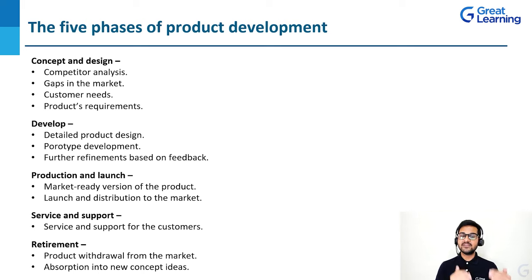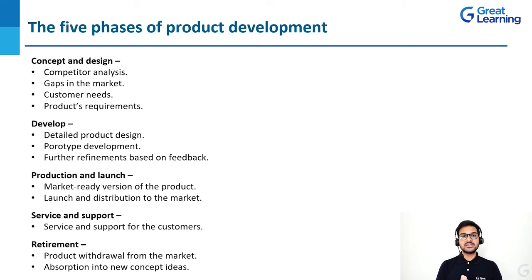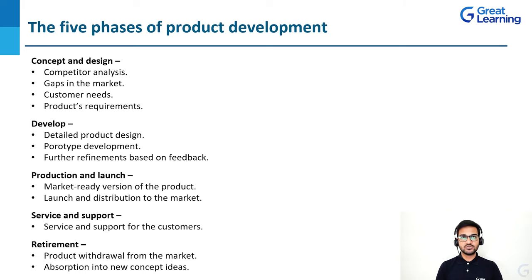Once that is done, we reach the second stage, which is development. Detailed product design is done, the prototype design is created, feedback is taken, and further refinements based on that feedback are made. A basic prototype will be ready in the development phase. Once that is done, we reach the third stage, which is production and launch — the market-ready version of the product is ready and then launch and distribution to the market happens.